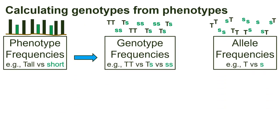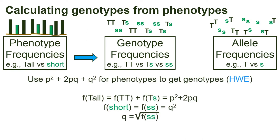Now let's think about calculating genotype frequencies from phenotype frequencies. For this, we can use the P squared, 2PQ, and Q squared equations to get the genotype frequencies, but only if we know the population is at Hardy-Weinberg equilibrium. The frequency of the tall phenotype would be P squared plus 2PQ, and the frequency of the short phenotype would be Q squared. We could take the square root of both sides of that second equation to get Q, then use the P squared, 2PQ, and Q squared equations to get the other genotype frequencies. We can get P easily since P plus Q equals 1. Keep in mind this only works if the population is at HWE — unfortunately, we don't have a good way to estimate genotype frequencies from phenotype frequencies if it isn't.